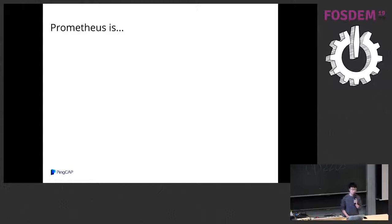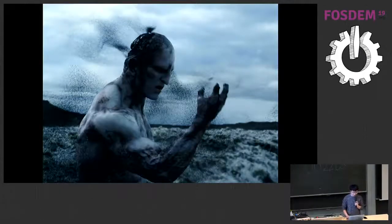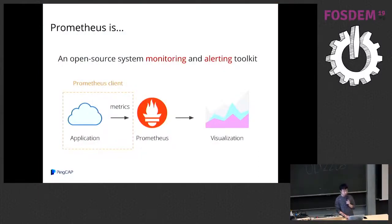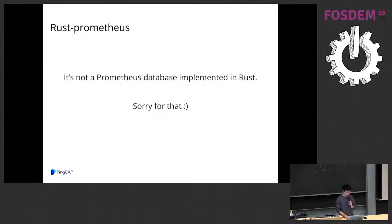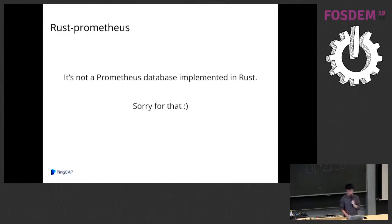So what is Prometheus? It's a system monitoring and alerting toolkit. Here is a common flow: your application collects metrics using a Prometheus client, then you push the metrics to Prometheus or let the Prometheus server pull your metrics, and finally you use visualization tools such as Grafana to visualize the collected metrics. Rust Prometheus is just a Prometheus client — it is not a full Prometheus implementation in Rust. But I promise you will find many interesting things even in this simple small client library.